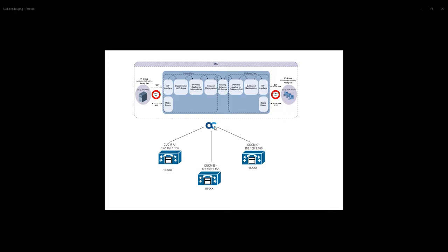AudioCodes can also be used in a service provider scenario where the service provider provides SIP trunks to route PSTN calls. You may have multiple trunks created towards the service provider and your call managers. You route calls from your call manager to the service provider, and incoming calls from the service provider come to AudioCodes, which then routes them to the correct destination.